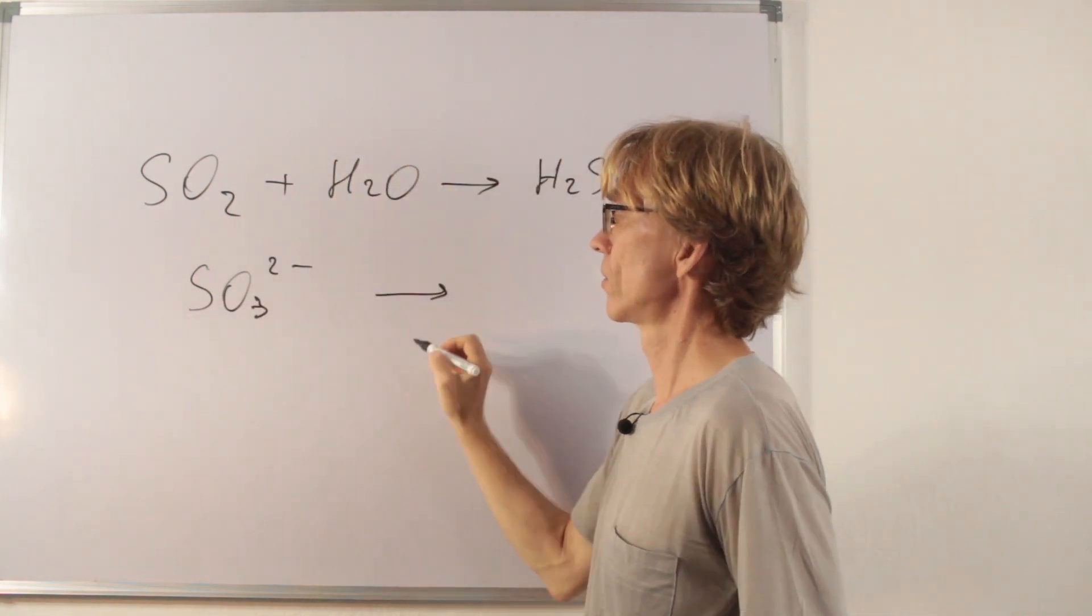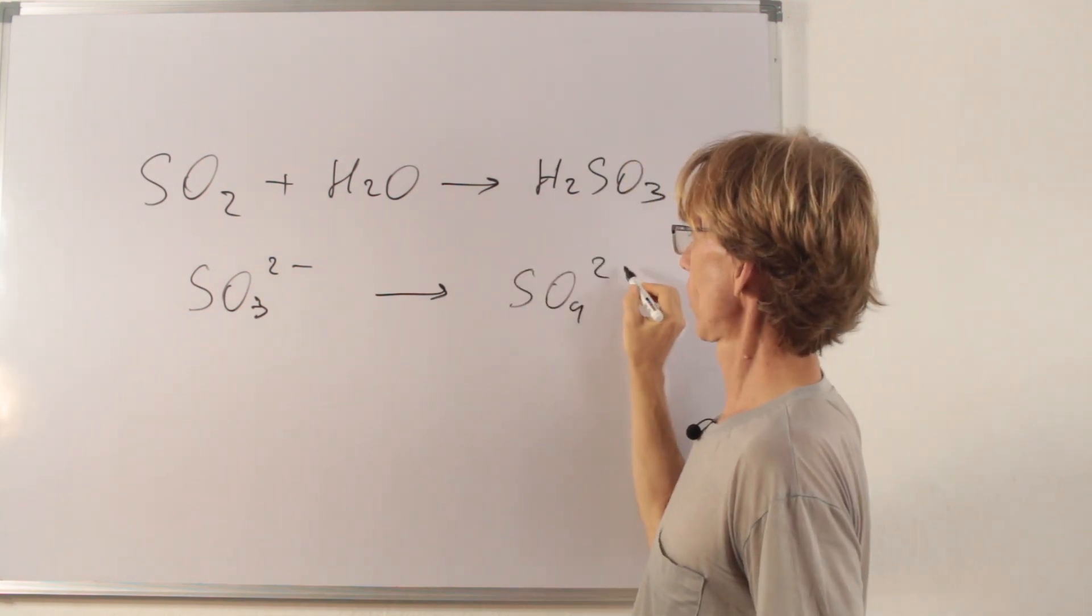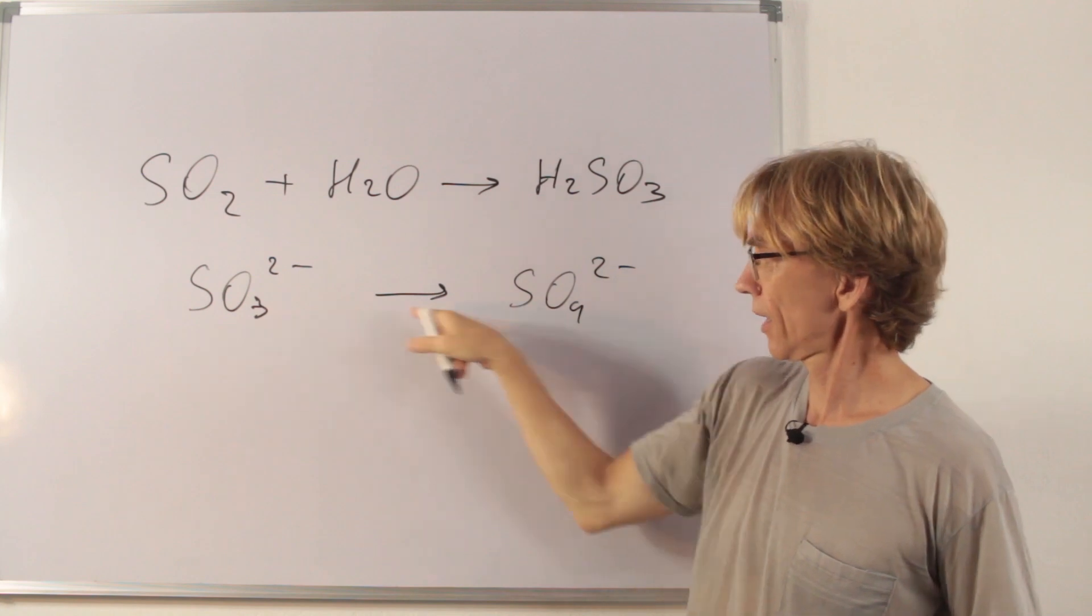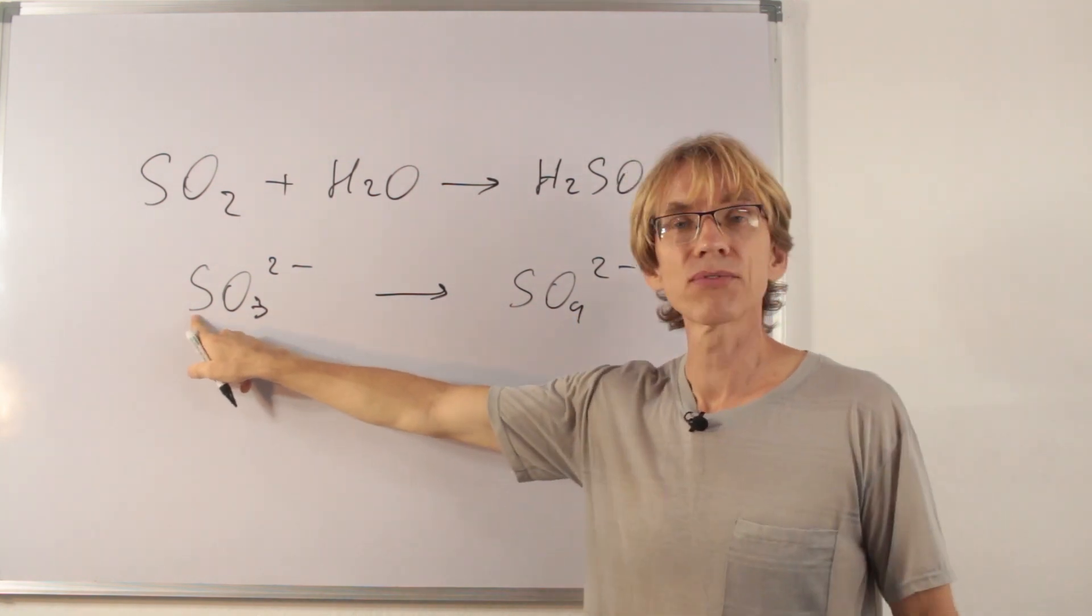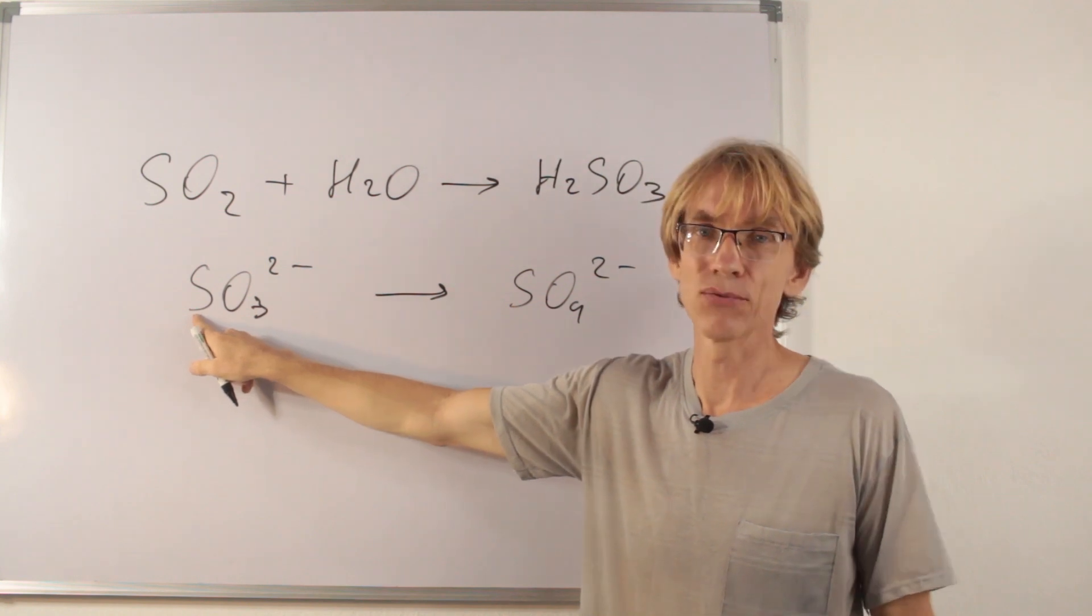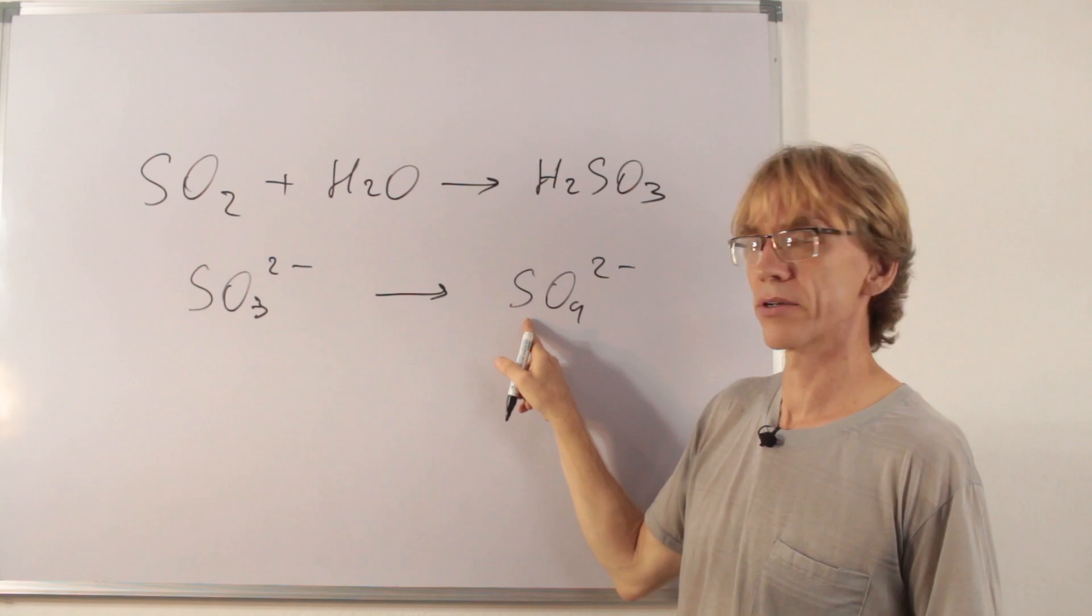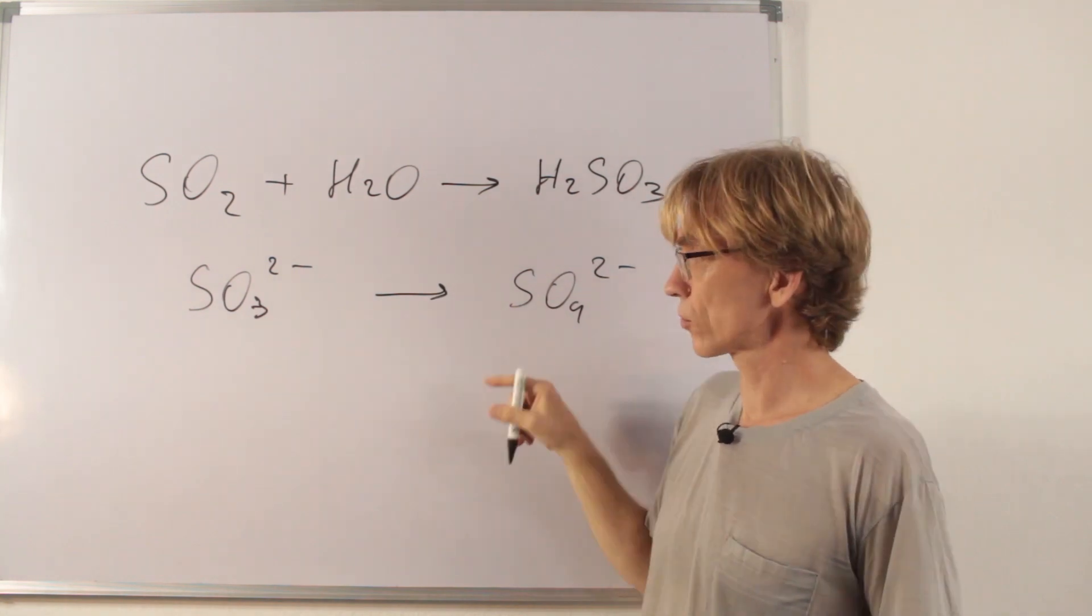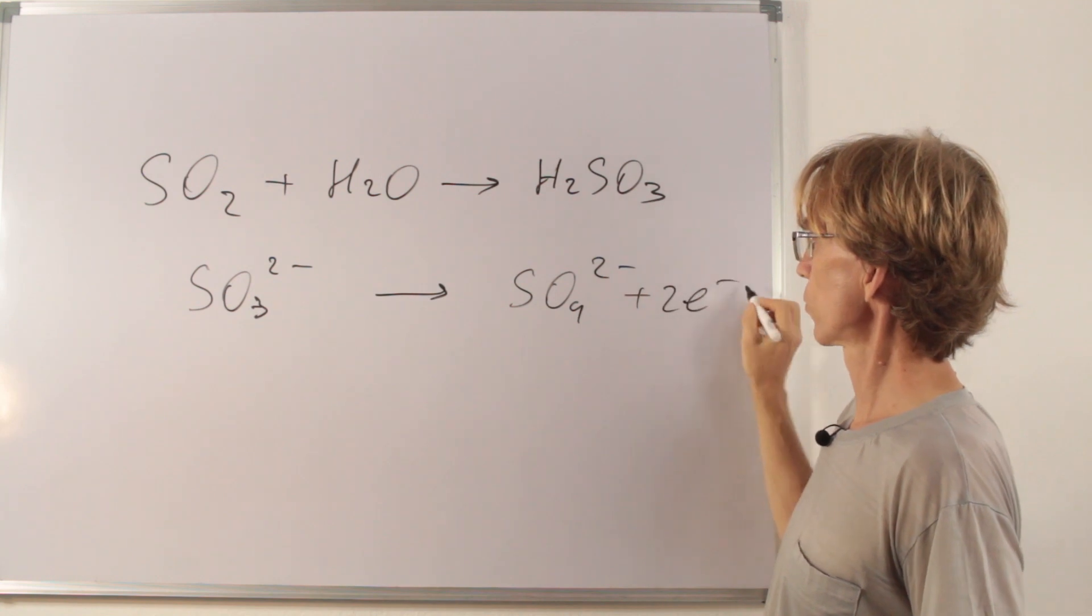Sulfite ion would change into sulfate on oxidation. Adding one oxygen. Oxidation state of sulfur here, if you can calculate it, but I'm just telling it, is plus 4 and here is plus 6. It means two electrons are lost. I can write just here, two electrons.